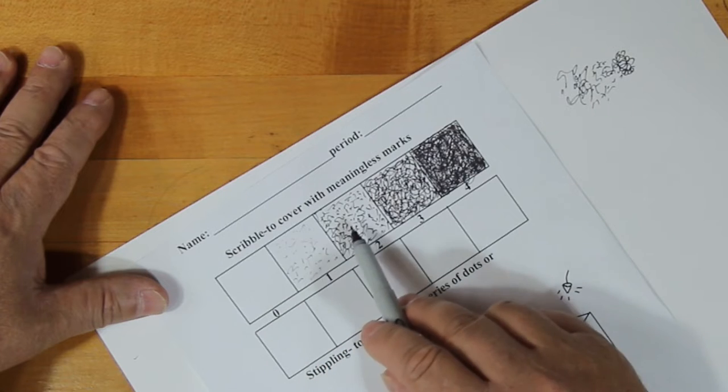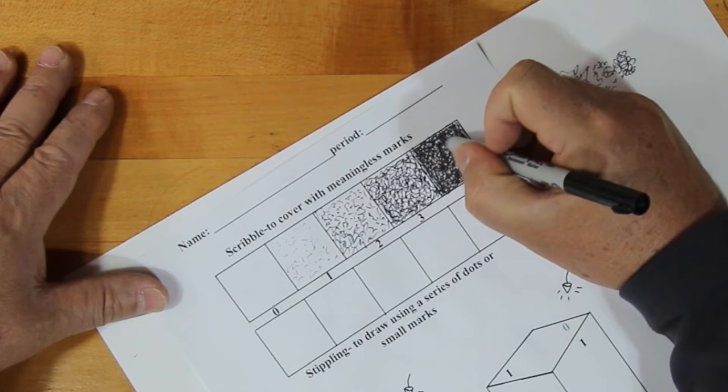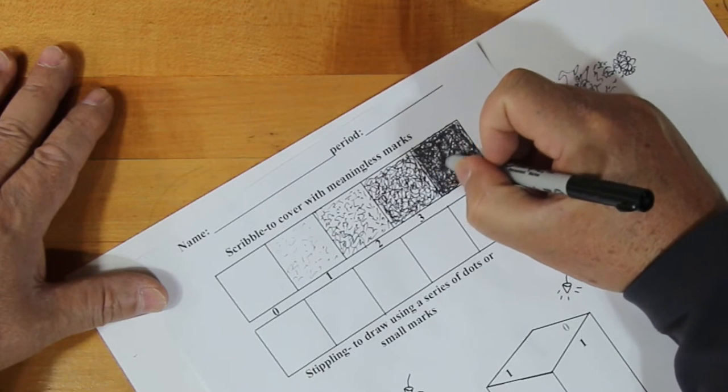So you want white, light, medium, dark, and then really dark. It's not going to go to pure black because we're not going to fill in every little crevice.